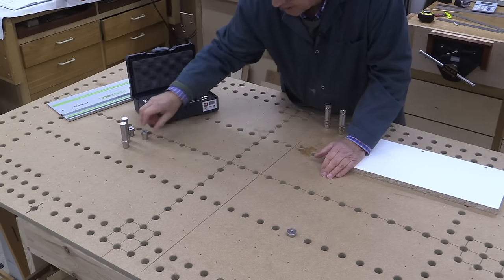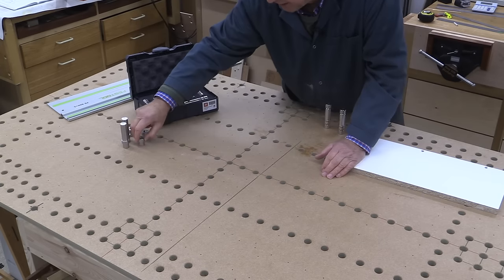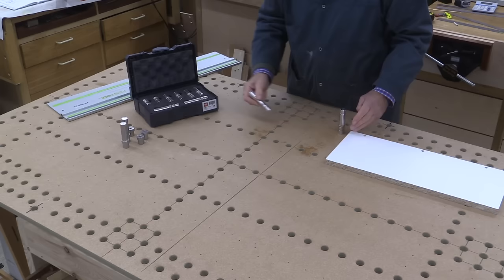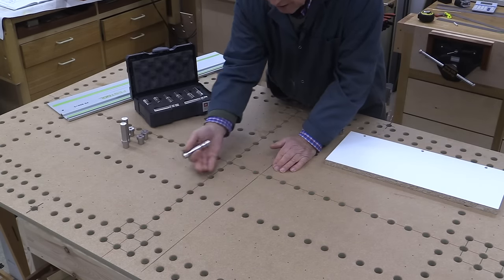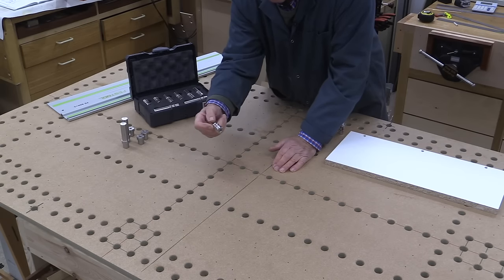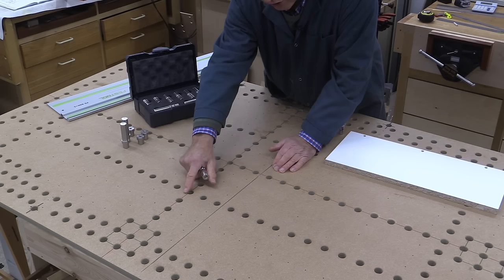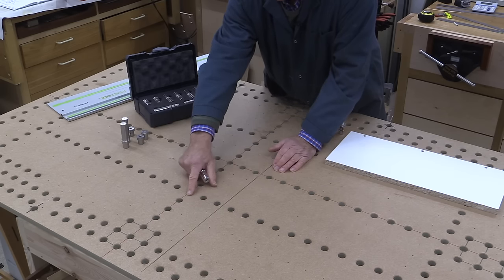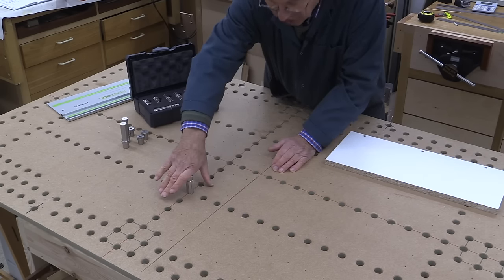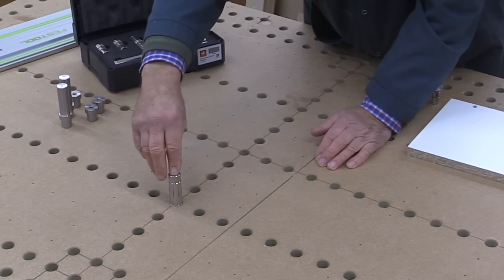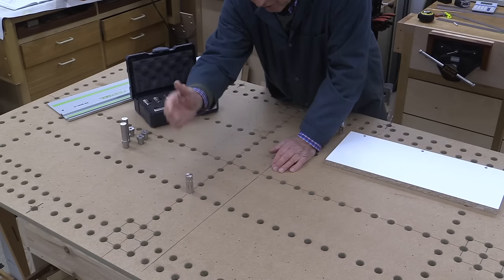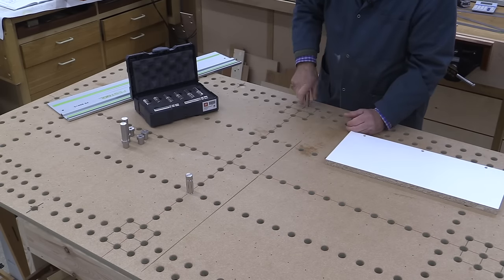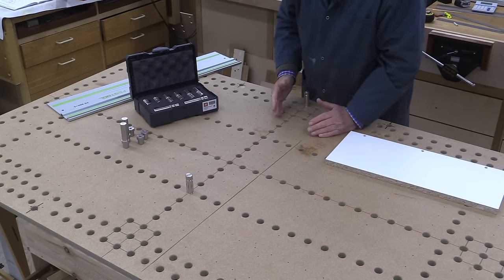But then along came Axminster and their ingenuity which created the Parf super dog. And these got their vertical stability because they had a chamfer ring on and it required users to put a chamfer in their dog holes on their bench top. But once that dog was set down into that chamfer and tightened up, that was then beautifully vertical and nicely held. And so that then was the creation of the new concept.